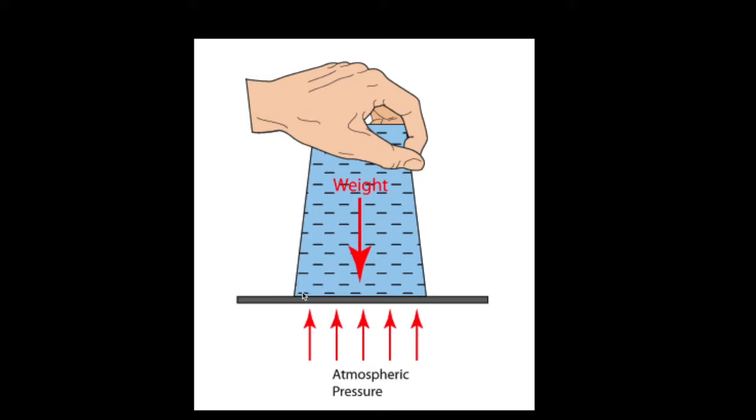As long as no air can get inside, the water can't get out because the air pressure is pushing upwards at 14.7 pounds per square inch. The weight of the water being pulled by gravity is less than the pressure of the air being squeezed against this side. Since this has a higher pressure, then this can't escape.